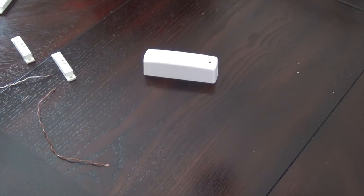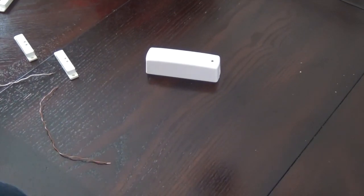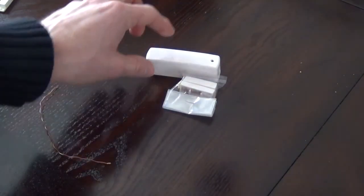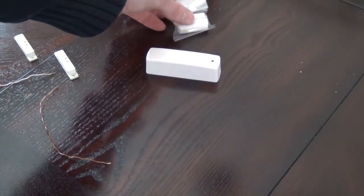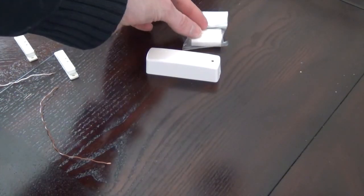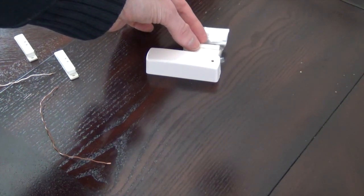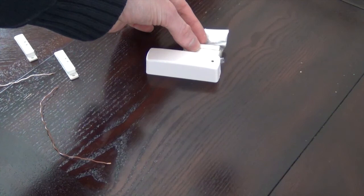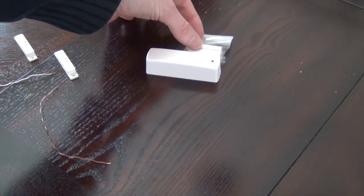Okay, so here's my Schlage door and window sensor. I've already paired it with my Vera 3. I hope you can see the little red light flashing. This is just the switch in its default state. The LED flashes when it triggers, when it gets close to the magnet. When you move it away and then get close to it again, it triggers.